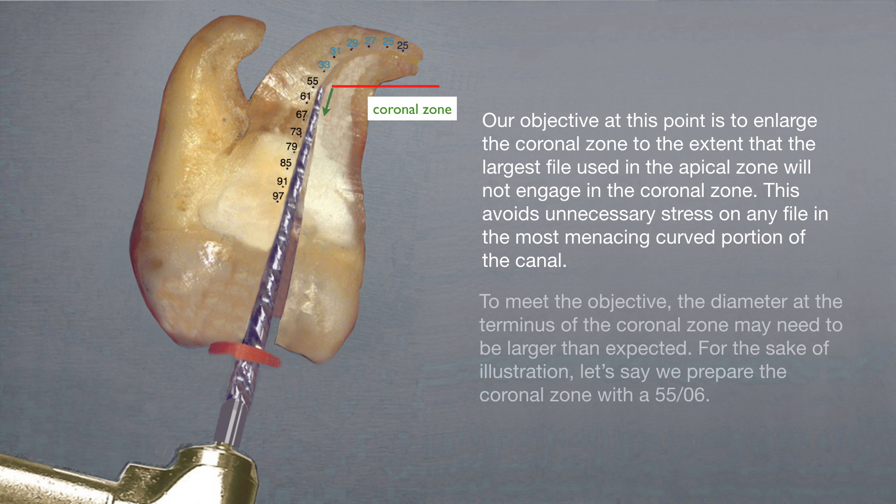To meet this objective, the diameter at the terminus of the coronal zone may need to be larger than expected. For the sake of this illustration, let's say we prepare the coronal zone with a 5506.